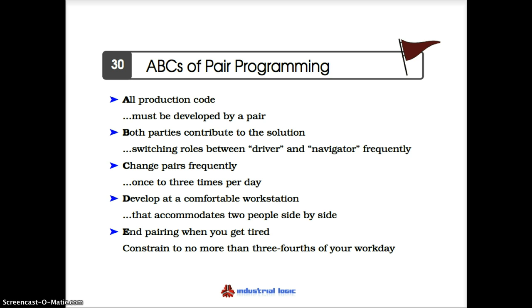Agile in a Flash card number 30 talks about the ABCs of pair programming — the very basics. The first is that all production code should be developed by a pair. Second, both parties contribute — neither one is a rester while the other is a worker. We change pairs frequently so we don't develop a hive mind, and we develop at a comfortable workstation. Kent Beck suggested the ideal is a lousy table and two wonderful chairs.